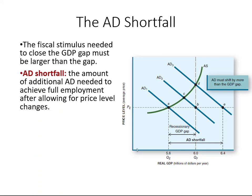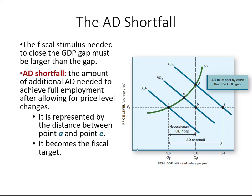After understanding this macro goal, the next job is to look at government spending, taxation, and income transfers — by how much should the government act to close this gap? In other words, how can we calculate the AD shortfall? We will first focus on government spending, then look at tax cuts, and lastly at income transfers.